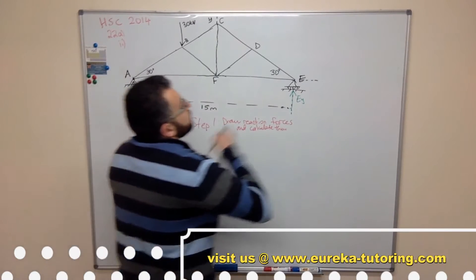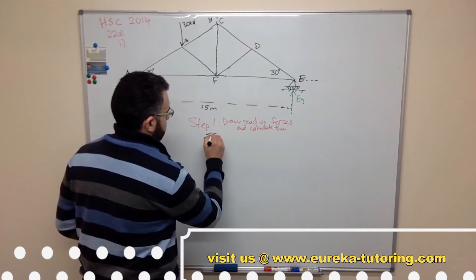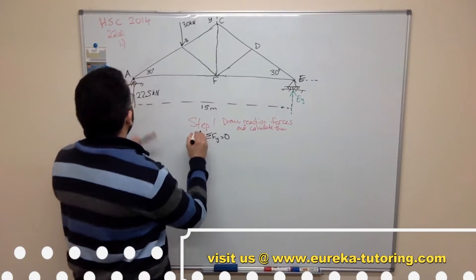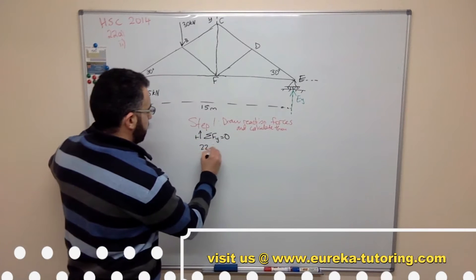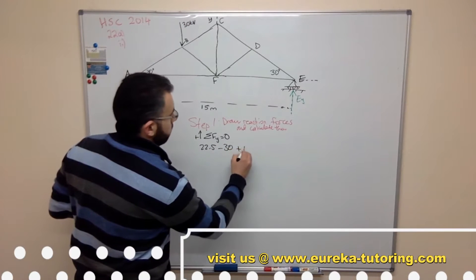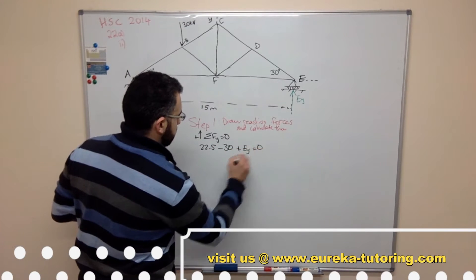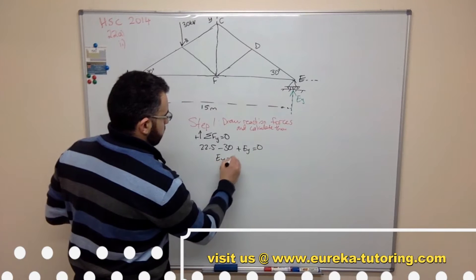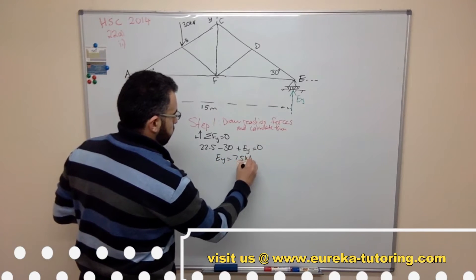So sum of forces in the y direction equals zero. We've got 22.5 going up so that's positive, 30 going down which is negative, and EY going up positive equals zero. EY equals 7.5 kilonewtons.